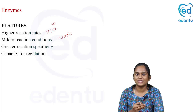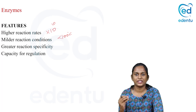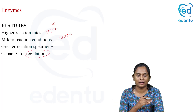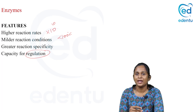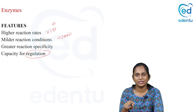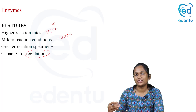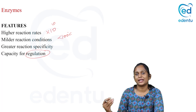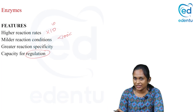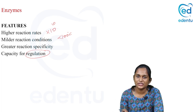Greater substrate specificity: the enzyme is specific to its substrate, so only that substrate gets converted to product. And there is a capacity for regulation — a reaction happening without enzyme cannot be regulated, but if the reaction is happening with the help of enzyme, the enzyme can be regulated and thereby the reaction can be regulated. So the features are: higher reaction rate, milder reaction conditions, greater substrate specificity, and the reaction can be controlled and regulated.